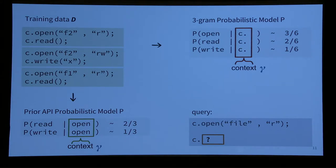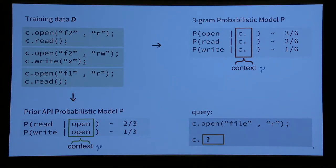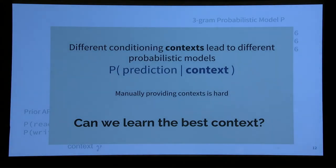We did a more advanced model that understands code — it does much more advanced program analysis. It knows that c is a variable and can go to previous locations of the same variable. So I can condition on the previous API called on the same object. Given a query with this different context, not just the tokens following the position, but based on the 'open' before in the query, I can say most likely I will do read or write. There are different contexts that can be learned, and manually providing these contexts is hard. Can we do machine learning for them?